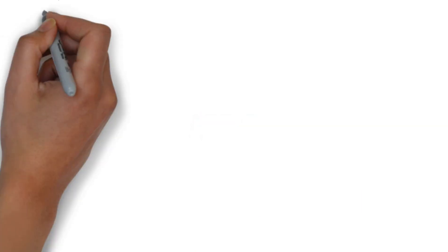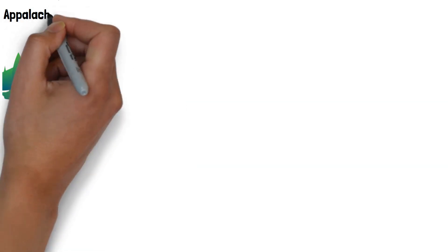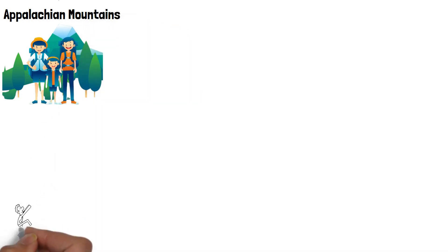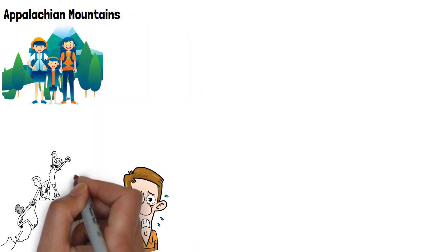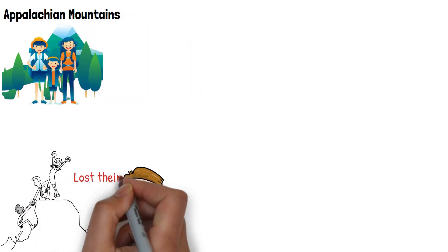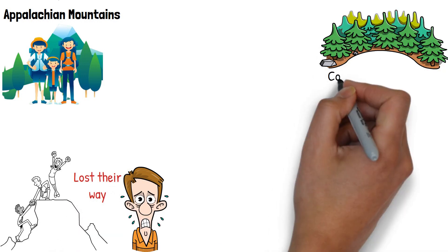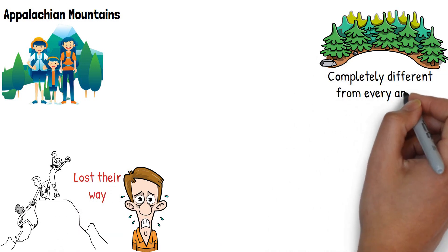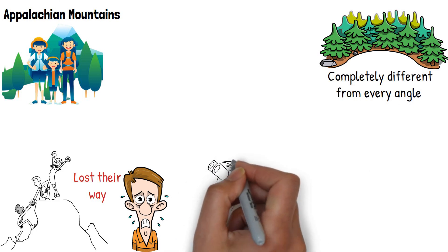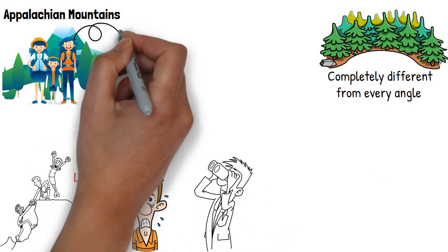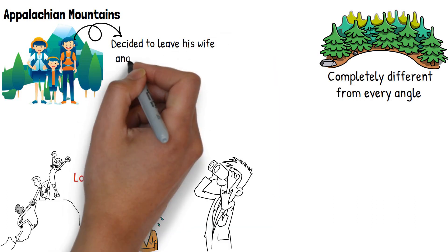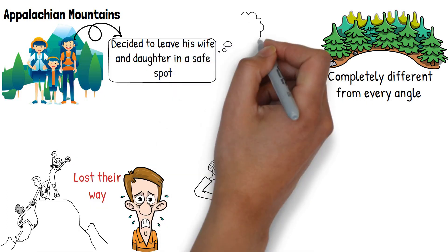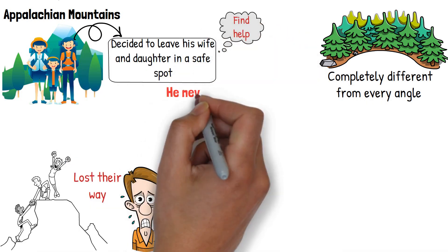Act 2. Our second story is about a family of three who went on a hiking trip in the Appalachian Mountains. They had been hiking for a few hours when they suddenly realized that they had lost their way. They tried to retrace their steps, but the forest looked completely different from every angle. Soon they started to feel like they were being watched. The father decided to leave his wife and daughter in a safe spot while he went to find help. He never returned.